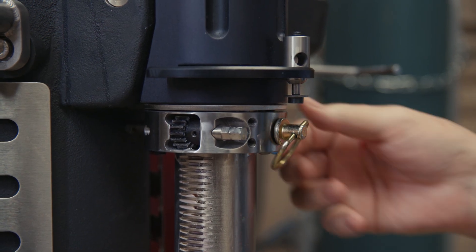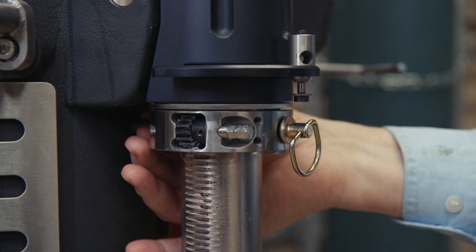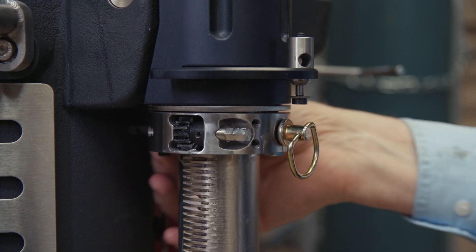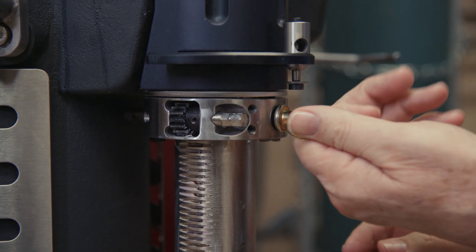Next we're going to pull out this pin. There's a retaining clip on the back that you'll have to pull out first. So pull that out, then you can take this pin out.